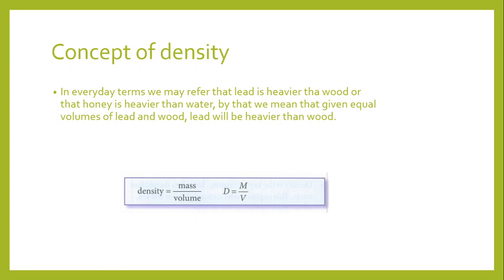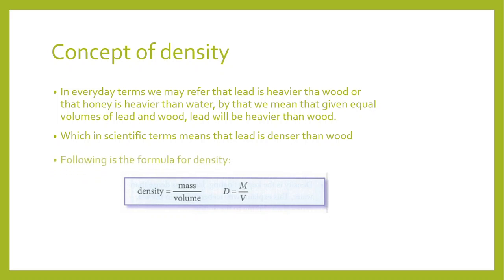Why do we think this way when we don't even specify what volume we're talking about? A small clip of steel compared to a whole bed of wood — obviously the wood bed would be heavier. But this common sense is telling us that provided we take equal volumes of these materials, lead will be heavier than wood. The idea of something being 'heavier' in our head basically means it is denser — so in scientific terms, lead is denser than wood.